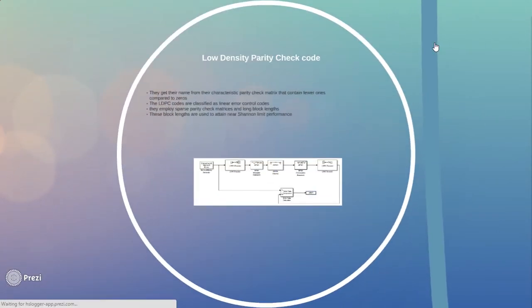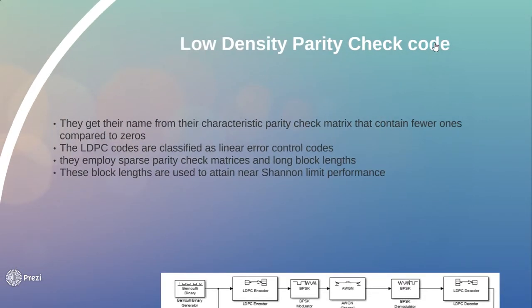Now moving on to low density parity check code or the LDPC code. They get their name from the characteristic parity check matrix that contains few ones compared to zeros. The LDPC codes are classified as linear error correcting codes. They employ sparse parity check matrices and long block lengths. These long block lengths are used to attain near Shannon limit performance.